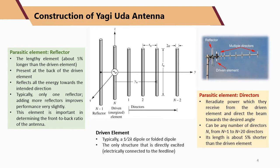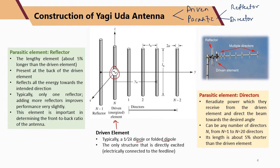The construction of the Yagi-Uda antenna consists of two main components: the driven element and the parasitic elements. The parasitic elements consist of the reflector and the directors. The driven element is usually placed second from the end of the Yagi-Uda structure. It is typically a half-wavelength dipole or a folded dipole, and it is the only element that is electrically fed or excited. In practice, a black stud marks the feed point.